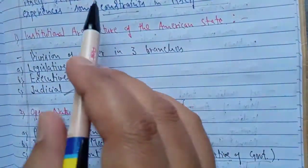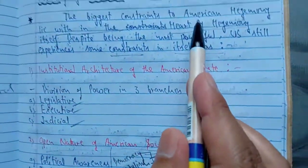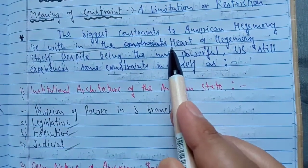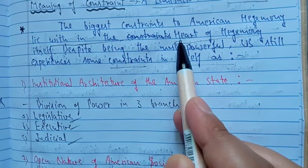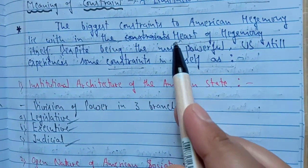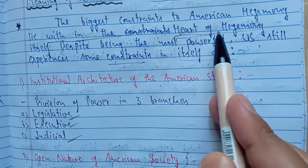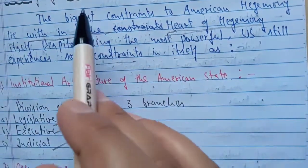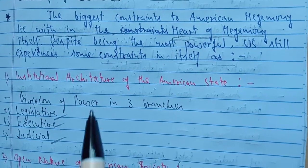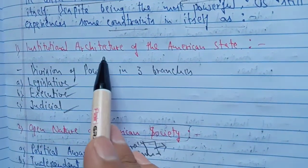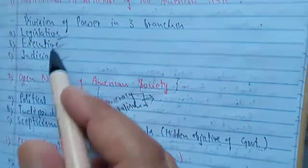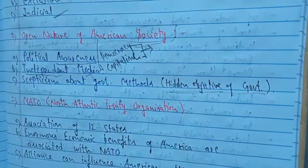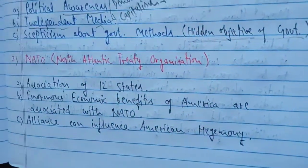So we said that American hegemony's biggest constraint lies within the heart of hegemony itself — no country or group from outside is challenging it. It is the internal matters of the US that are putting constraints on its power. First was the institutional architecture — the division of power that keeps a check. Second was the open nature of American society. And the third constraint is NATO.